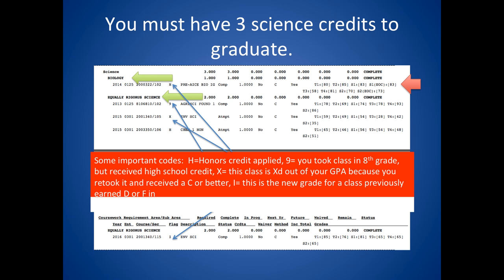You must have three science credits to graduate, and one of these science credits must be biology. Again, see the red arrow pointing to where the EOC has been figured into the semester grades. You will also see several codes used on this report. An H code shows that this course received honors credit. A 9 shows that this course was taken in 8th grade but counted for high school credit. The X and I codes go together — if a student failed a class, retook it and did better, we can X out the bad grade for the new good grade, hence the I that appears in the retaken class. Only classes in which you made a D or F may be X'd out, and you must make a C or better in the new class. This positively impacts your GPA.